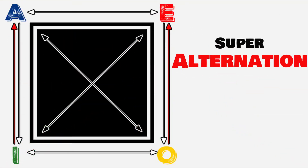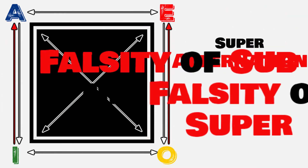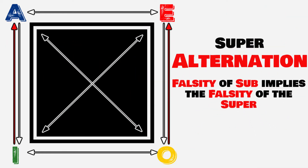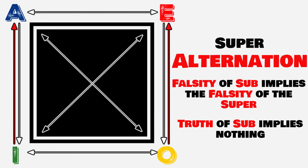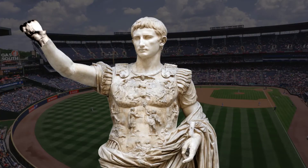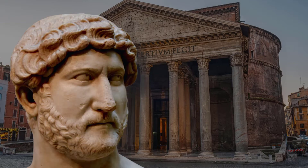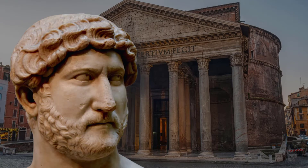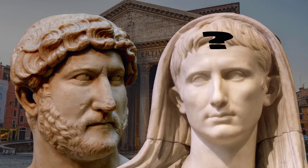With superalternation implication, we reason in the opposite direction — we start with our knowledge of the subaltern. The falsity of the lower subaltern implies the falsity of the upper superaltern. But the truth of the lower implies nothing of the upper. So if it's false that some Roman emperors were baseball fans, we know that no Roman emperors were baseball fans, and it must be false that all were. But if it were true that some Roman emperors were Spanish, we wouldn't be able to tell if it was only some or if it were all — both would be possible.